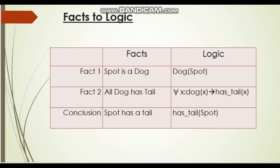For 'all dogs have tails,' we split it into two parts. Using the for-all sign with variable X: for all X, dog(X) implies has_tail(X). Here X is a variable representing every dog regardless of name. So X may be Spot, meaning Spot has a tail.